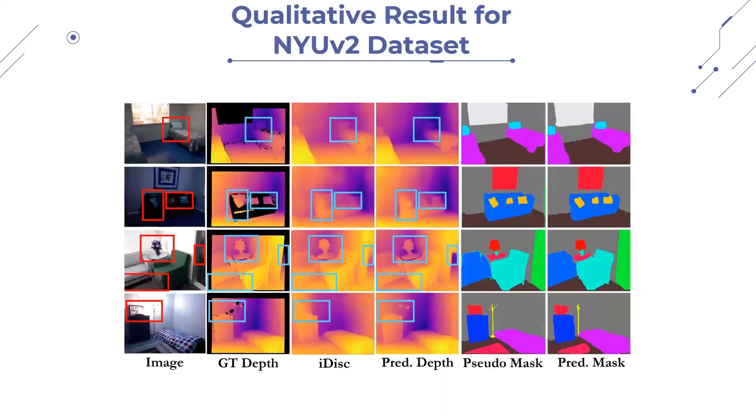Now let's take a look at the qualitative results of our proposed method on NYU v2 dataset. In these images, rectangular boxes highlight the region of interest. It is evident that our proposed method produces superior results in depth tasks compared to the existing iDisc approach in terms of edge sharpness, object background contrast, the similarity between prediction and the ground truth, while simultaneously producing accurate semantic labels.